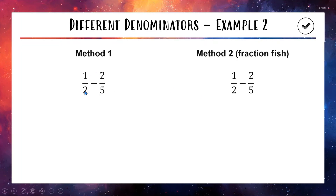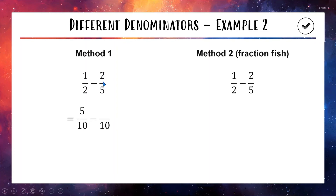Using Method 1, we make the two fractions have the same denominator. A number that both 2 and 5 multiply into is 10. We rewrite both fractions with a denominator of 10. For the first fraction, multiply top and bottom by 5 to get 5 over 10. For the second, multiply top and bottom by 2 to get 4 over 10. Now we have the same denominator, so we subtract the tops: 5 minus 4 is 1, giving 1 out of 10.